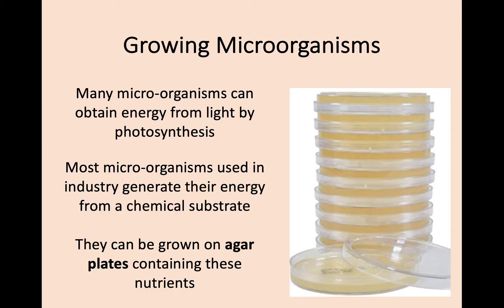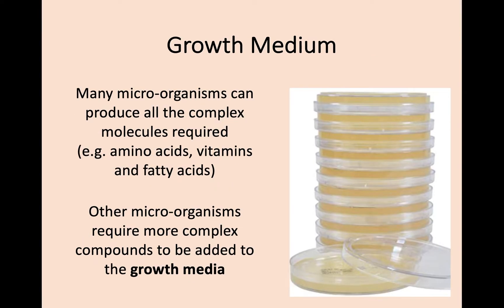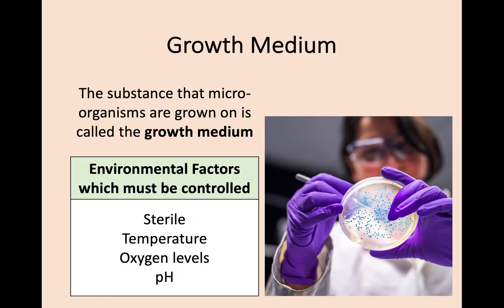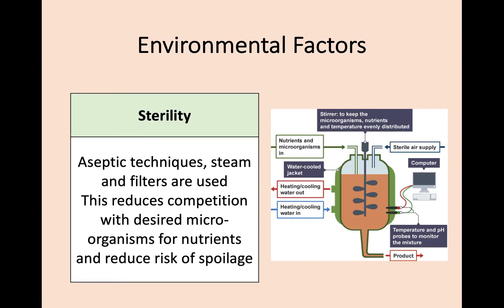There are big differences between microorganisms: some are able to produce all the complex molecules they require, however others need even more complex compounds added into the growth medium to ensure their survival. The growth medium alone is not enough — we also need to strictly control environmental factors which can affect them, including temperature, oxygen levels, and pH levels. We also need to make sure microorganisms are grown in a sterile environment to ensure nothing else grows which could affect them.